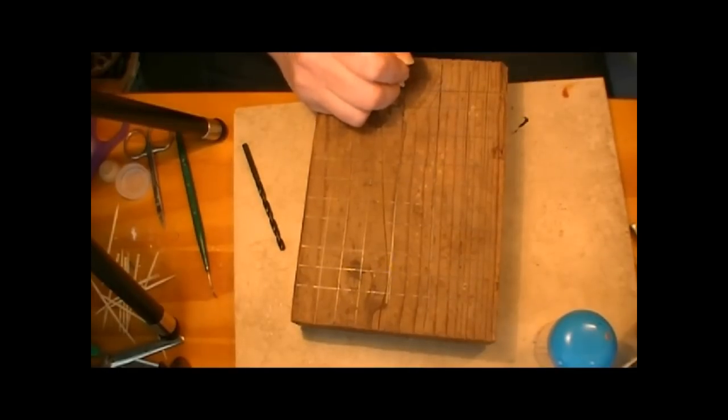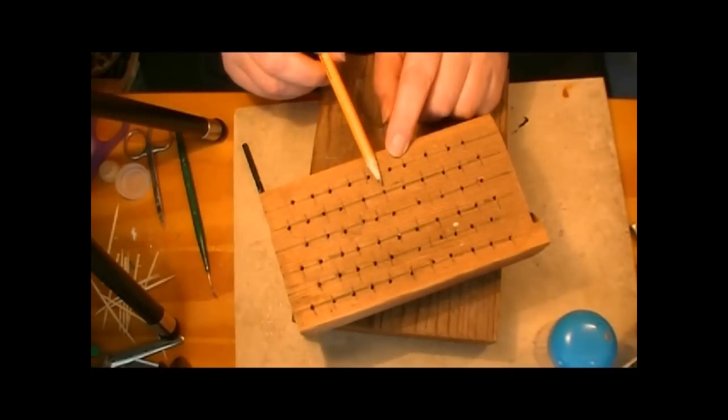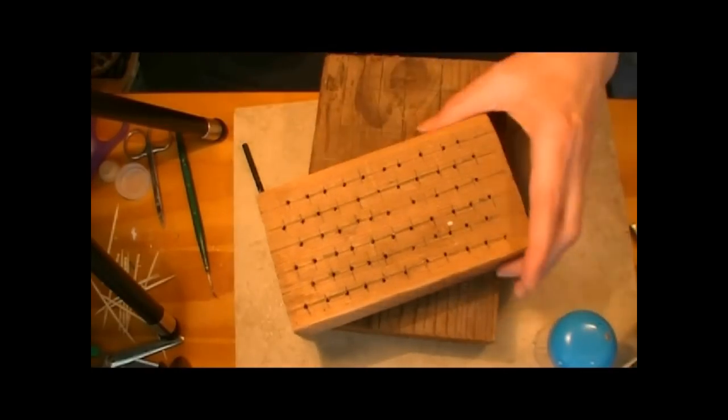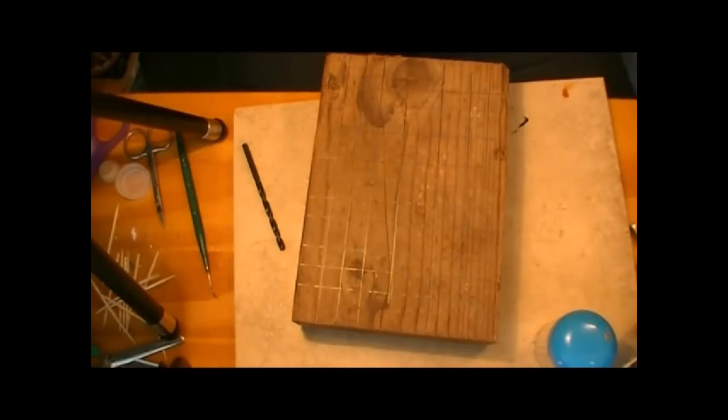Everywhere those lines intersect we're going to drill a hole. Now when my dad did it he offset them somewhat. They're kind of random. But you see there. But we're going to put them farther apart so that'll be fine.